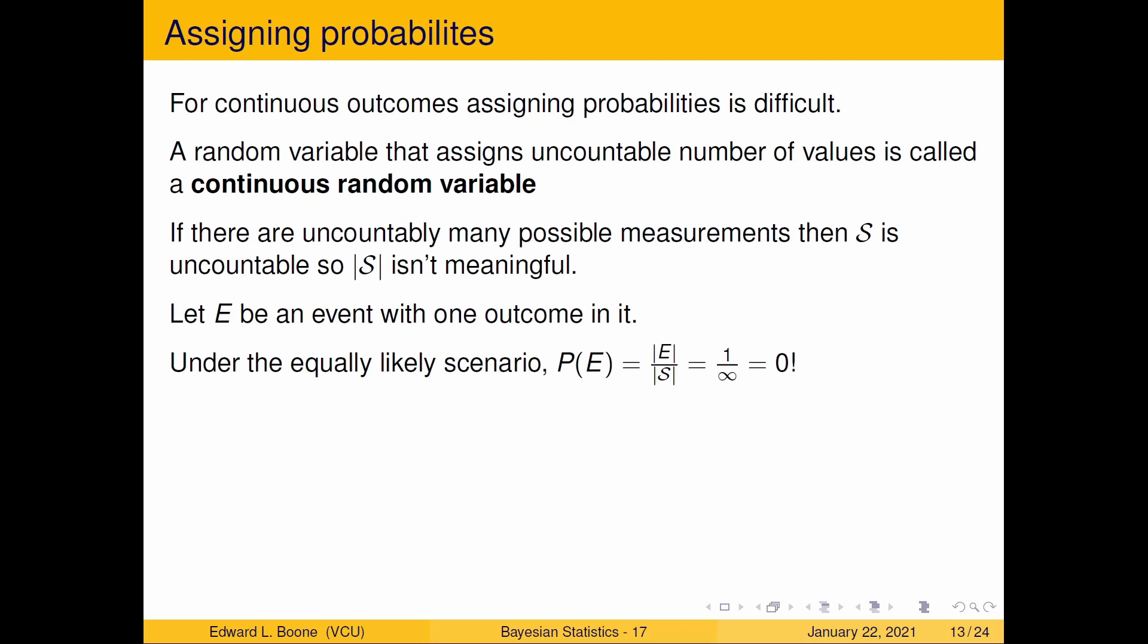That causes problems with this idea of equally likelihood scenario. If I have uncountably many outcomes, that means there's going to be an infinite number. What we can say is that measuring the size of the sample space is no longer going to be meaningful because it's going to be an incredibly large number, which I'm just going to put down as infinity. If we let E be an event with one outcome in it, that's one over infinity. This course is designed for people who aren't mathematicians, but they do have some reasonable math background. But the key here is it's equal to zero.